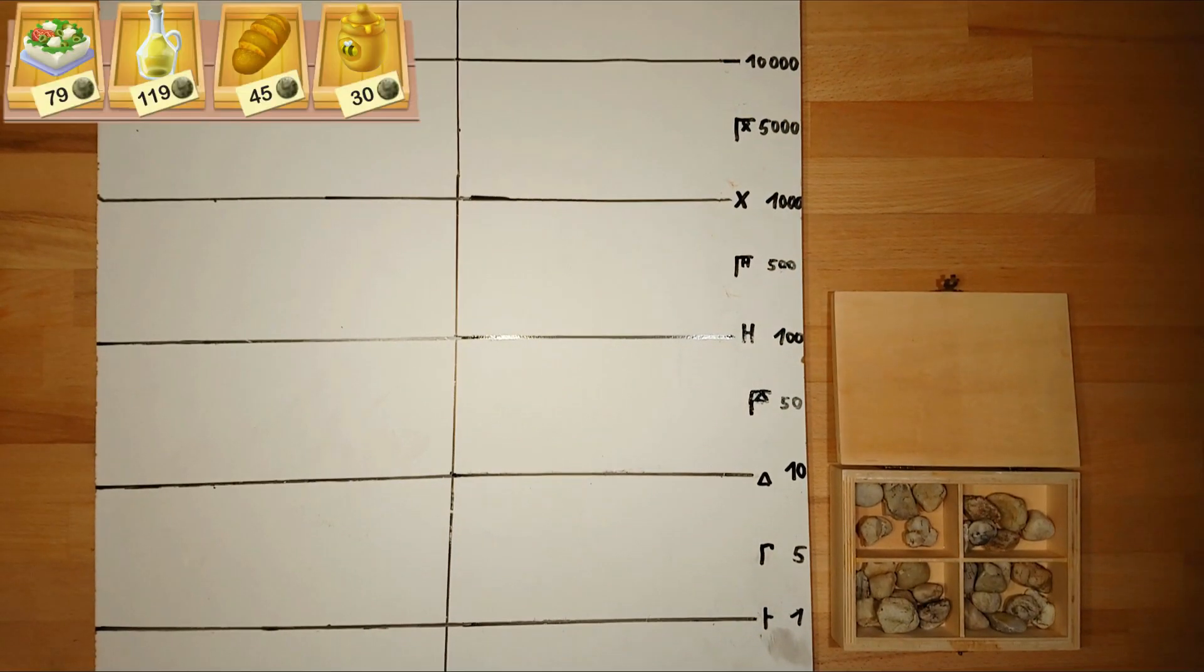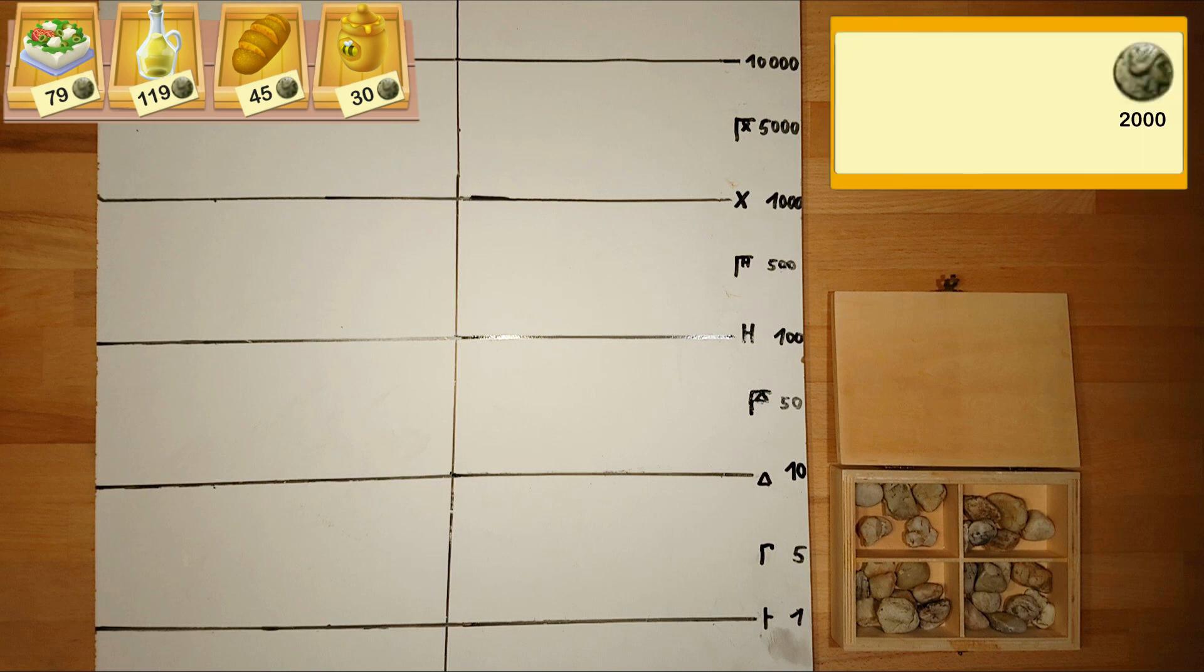As an example let's say we are at a market and want to buy different goods. There's feta cheese for 79 coins, olive oil for 119, bread for 45 and honey for 30 coins. I'd like to have four feta cheese, four bottles of olive oil, 14 bread and six glasses of honey.